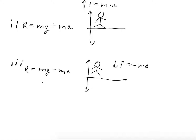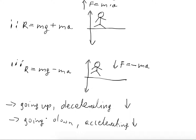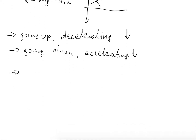A simple rule: whenever the acceleration is pointing downwards, the reading on the scales will be lower, and whenever the acceleration is pointing upwards, the reading will be higher. We need to be careful here — the acceleration points downward in the case where the lift is going up and slowing down to a stop (decelerating), and also when the lift is going down and accelerating.